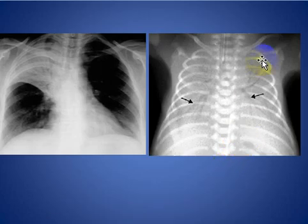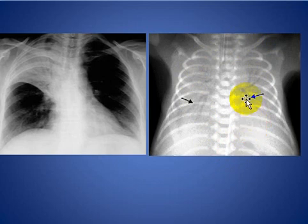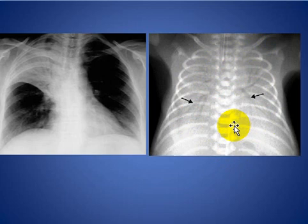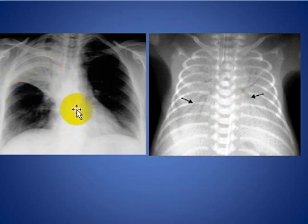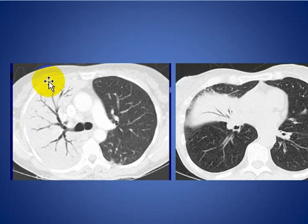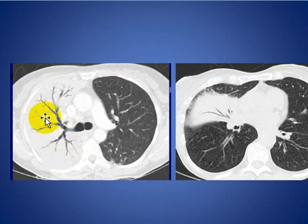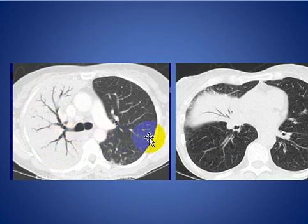Here are two patients — one child — with hyaline membrane disease. You can see the granularity and hypo-aeration of both lungs with air bronchogram noted bilaterally. Here we see right upper lobe collapse with air bronchogram, the collapse being due to mucous plugging.